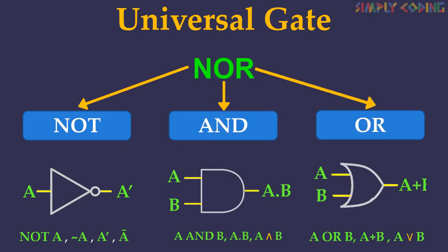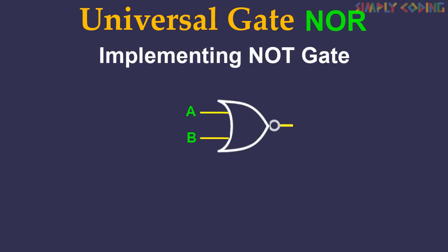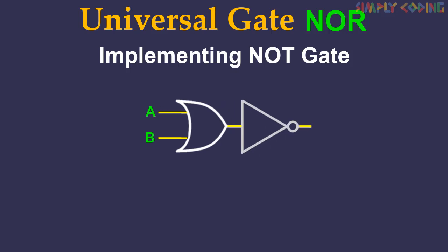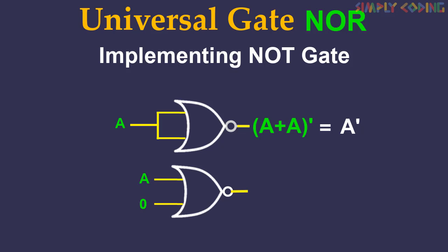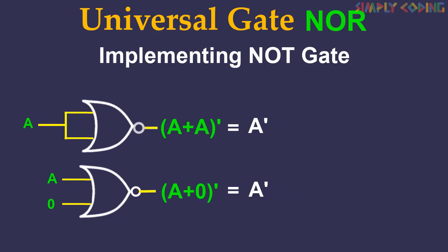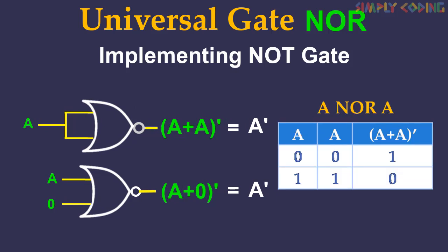Now let's look at NOR gate and see how we can make basic gates NOT and OR using only NOR gates. First we will look at making a NOT gate using a NOR gate. A NOR gate is equivalent to an OR gate followed by a NOT gate. If we join the inputs, it makes the output of the OR part of the NOR gate the same as the input, eliminating it from consideration and leaving only the NOT part. The expression in NOR form is (a + a) bar, which is the same as a bar. Another way is to consider input b as always 0: applying the identity law, (a + 0) bar equals a bar, or NOT. You can write this as a NOR a, and its truth table is the same as NOT gate.